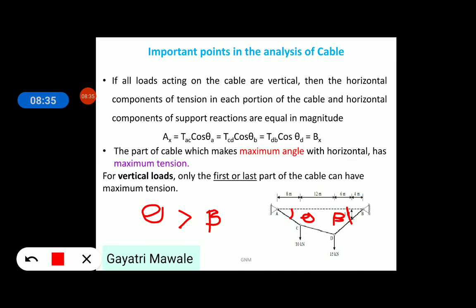But if beta is greater than theta then, tension in BD part of the cable will be maximum. For vertical loads, only first and last part of the cable can have maximum tension.